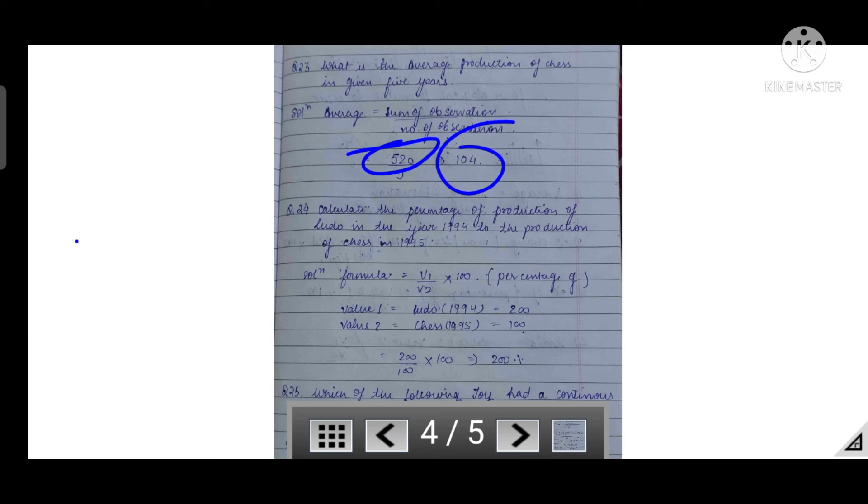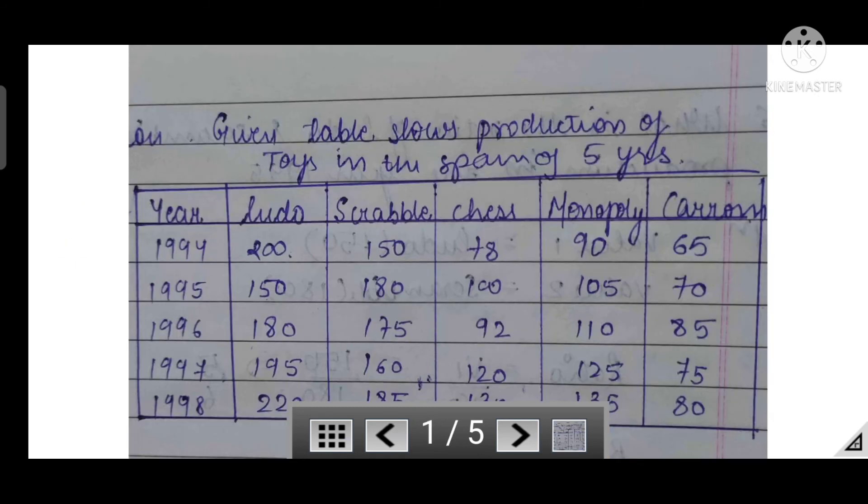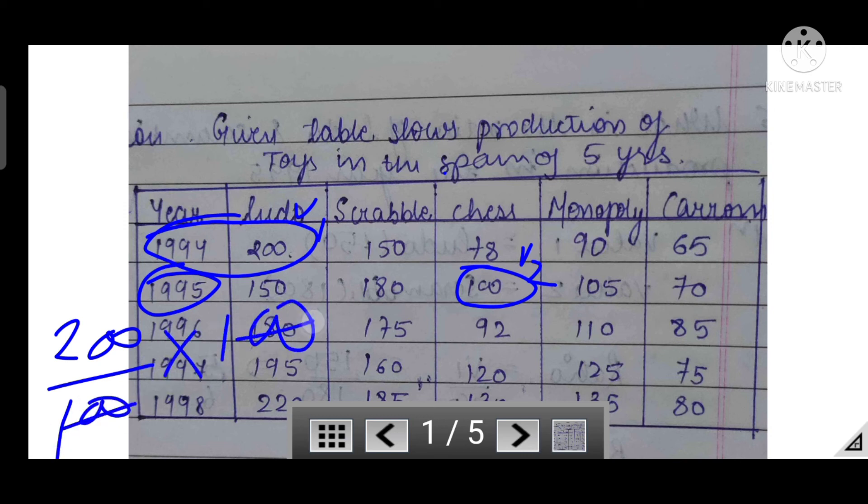The next question: calculate the percentage of production of Ludo in the year 1994 to the production of chess in 1995. What we have to do here is take percentage of. As I told you, you will get the direct question: percentage of or percentage change. Percentage change is increment or decrement. Here we take percentage of, so we know the formula: V1 upon V2 into 100. Let's look at the table. We have Ludo's 1994 data and chess's 1995 data. This will be value 1, this will be value 2. So we take 200 upon 100 into 100, we get the answer 200 percent.